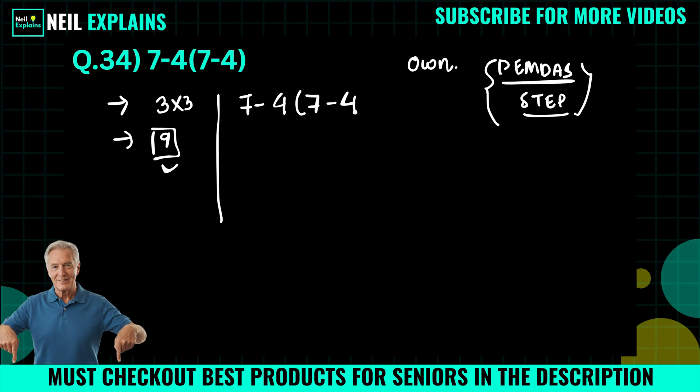So according to PEMDAS, parenthesis, exponent, multiplication, division, addition, subtraction, first preference will be given to parenthesis. So here the parenthesis operation is this, so we will operate this part first. 7 minus 4, it will become 3.